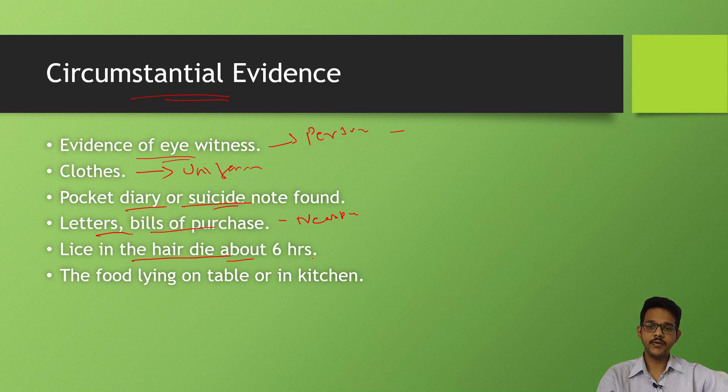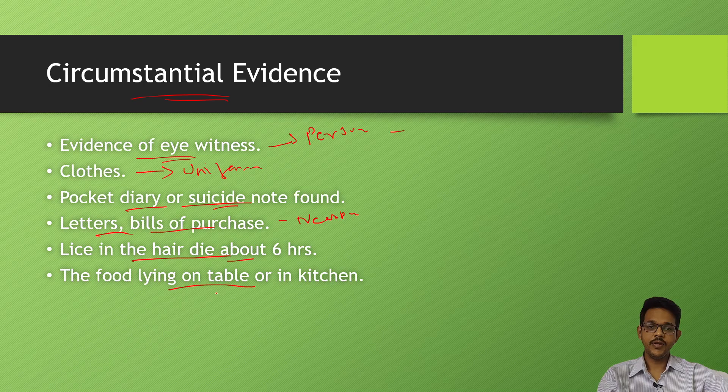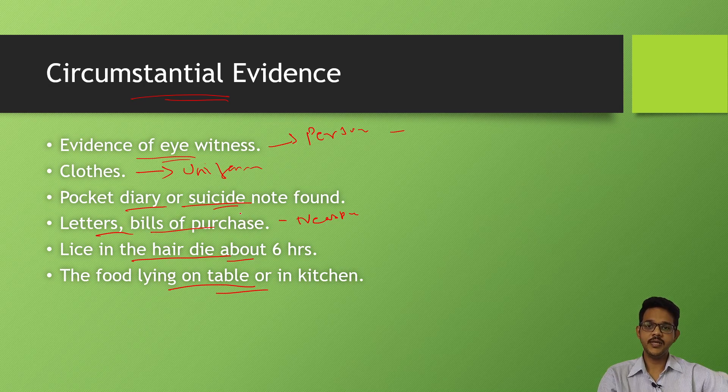Lice in the hair die about 6 hours after the person died. Food lying on the table or in the kitchen - whether spoiled food is present - indicates circumstantially how much time the person has died.